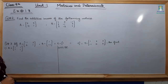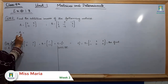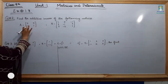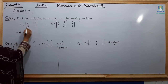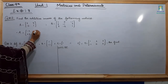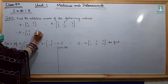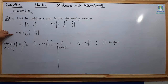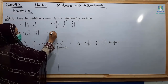Now students, we are going to solve question number 2: find the additive inverse of the following matrices. This is the additive inverse of matrix A. Now write the additive inverse of matrix B, which is minus B.